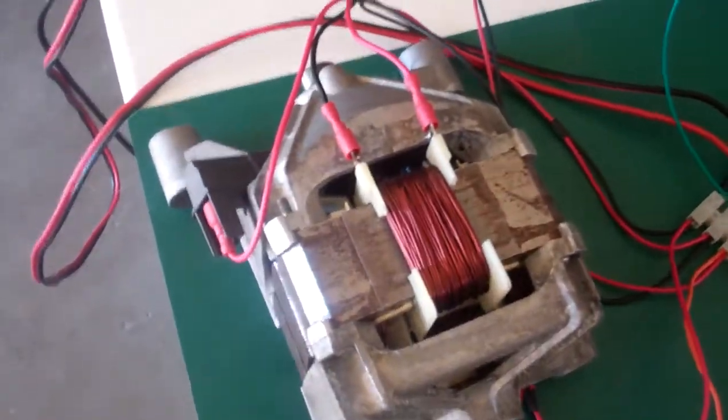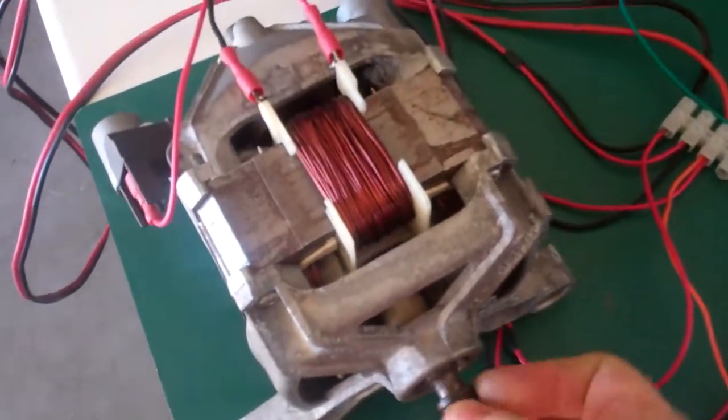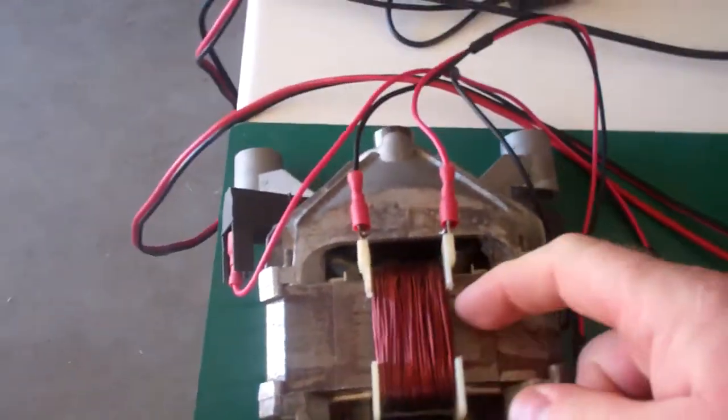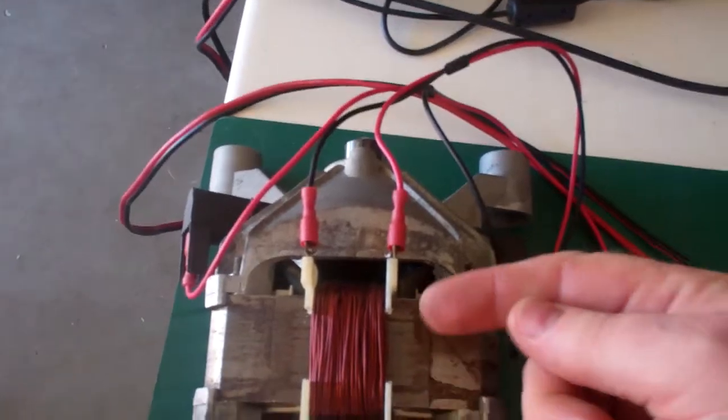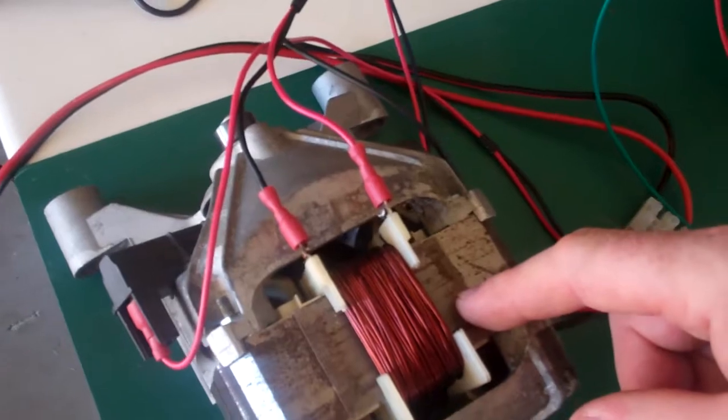This is my setup. It's an old washing machine motor. This coil here, it's basically just wrapped around just the stator there, introduces a magnetic field.